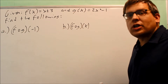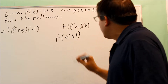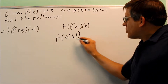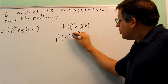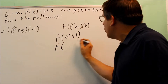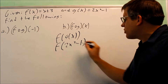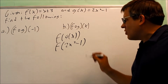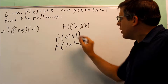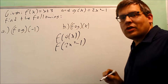So I'm going to do part b first. f of g of x — this is our definition for f of g of x. That says we put the g of x inside of the f. So the g of x right here, I'm going to replace that with the expression that it goes with, which is 2x squared minus 1.